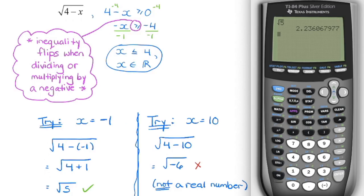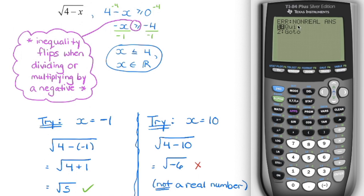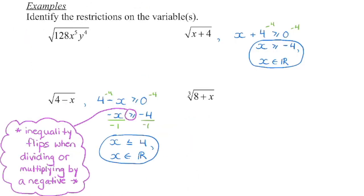Try this out. If we choose a value for x that is less than or equal to 4, say negative 1, and substitute it into the original expression: minus and negative multiplied together becomes positive, so 4 plus 1 is 5. The square root of 5 is a real number — you can verify on your calculator. Now if we try a value that is not less than or equal to 4, say x equals 10: 4 minus 10 is negative 6, and the square root of negative 6 is not a real number. Your calculator will show an error. So you can always choose a test value and substitute it in to check that the inequality sign is going the right way.